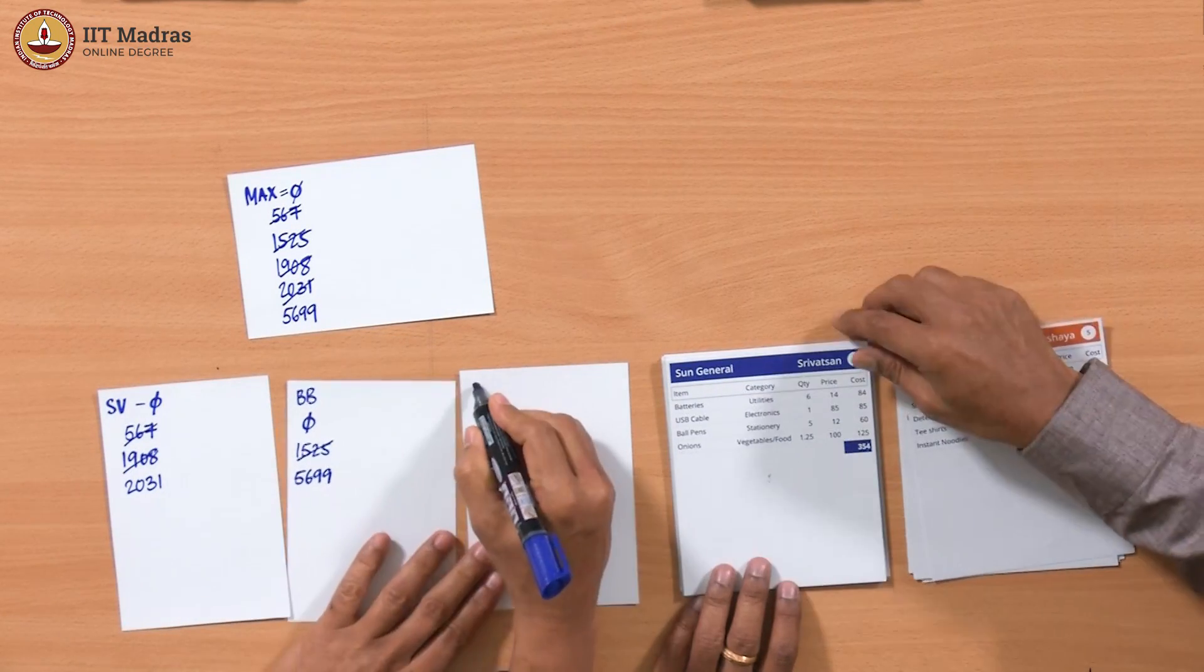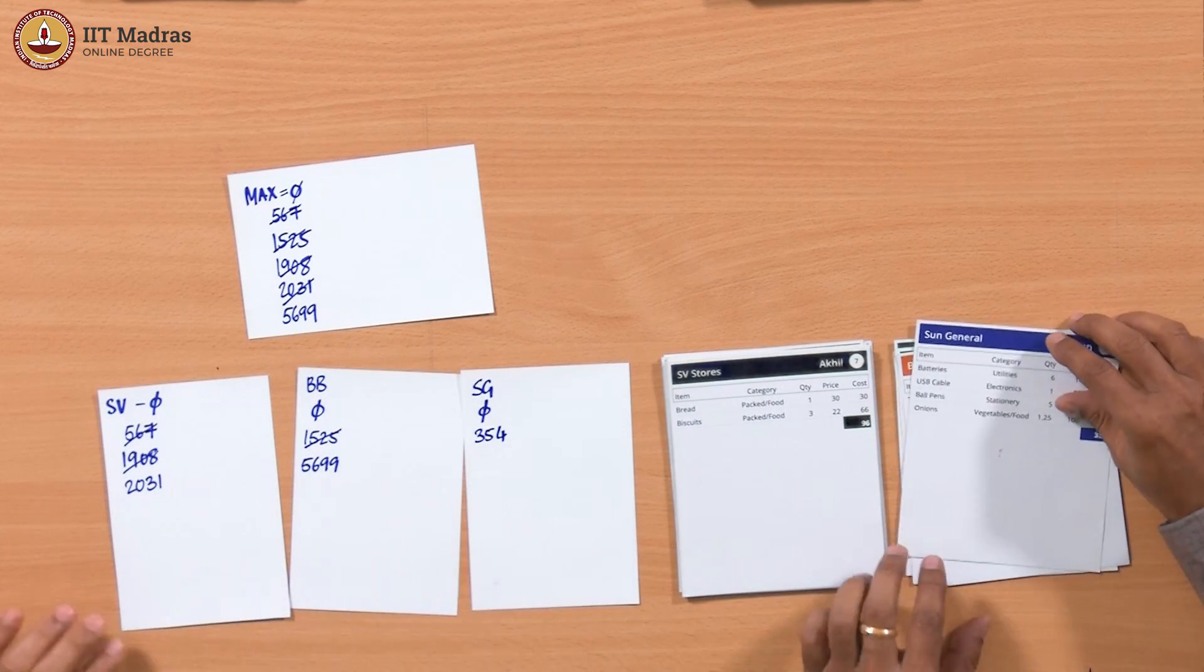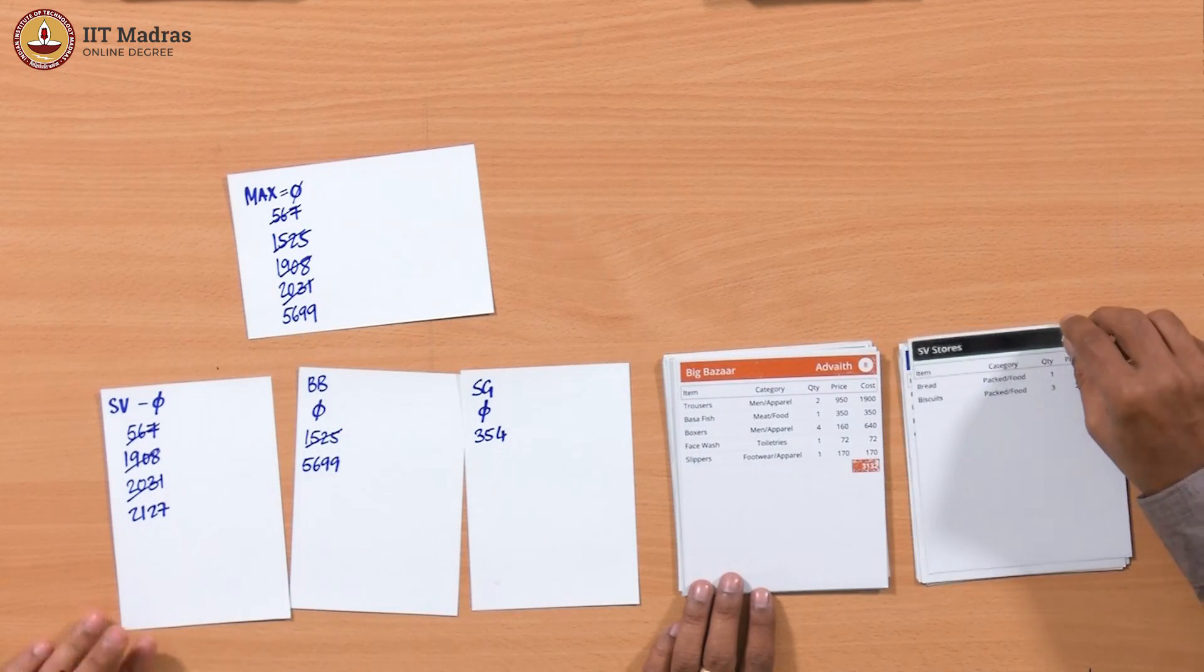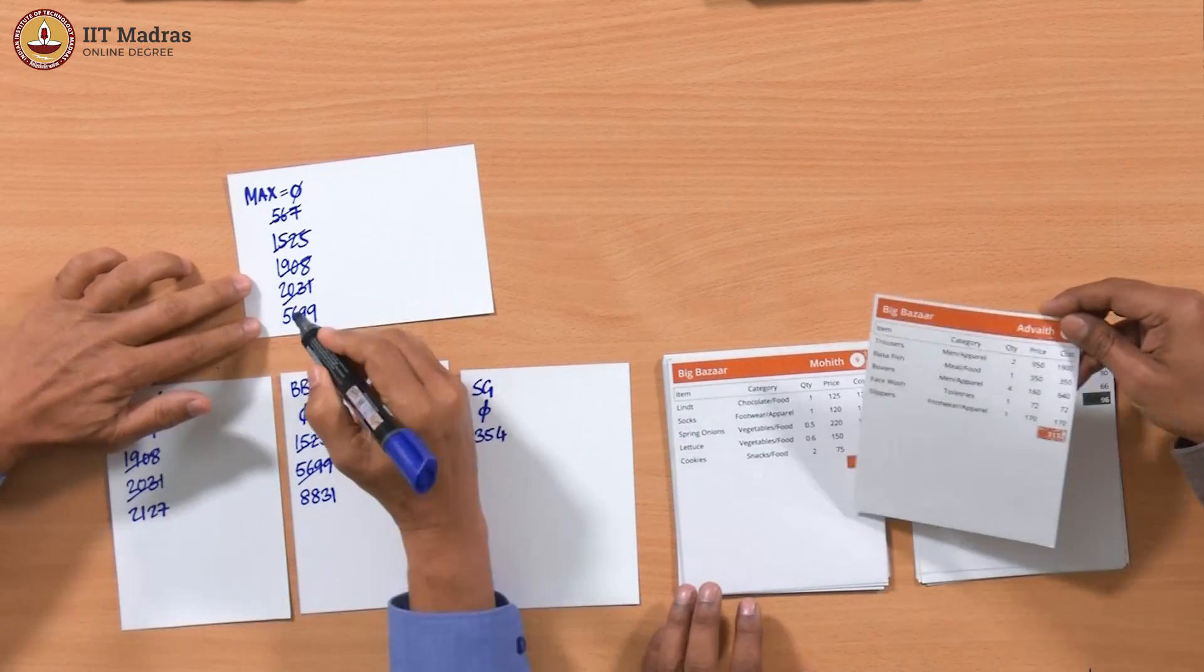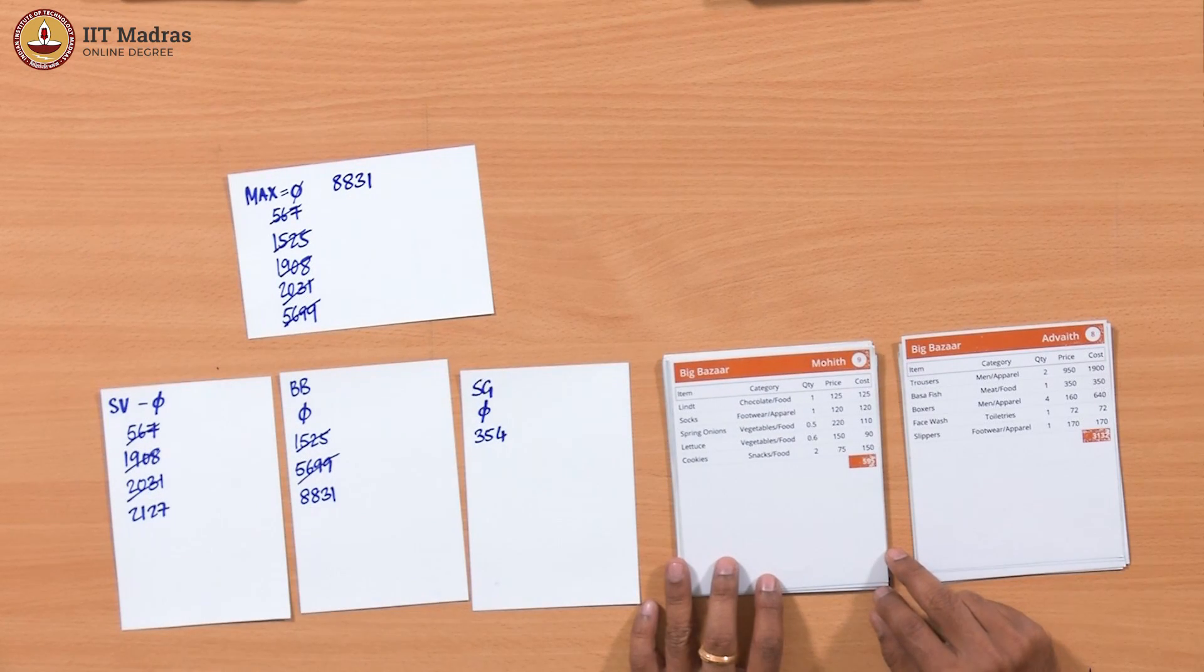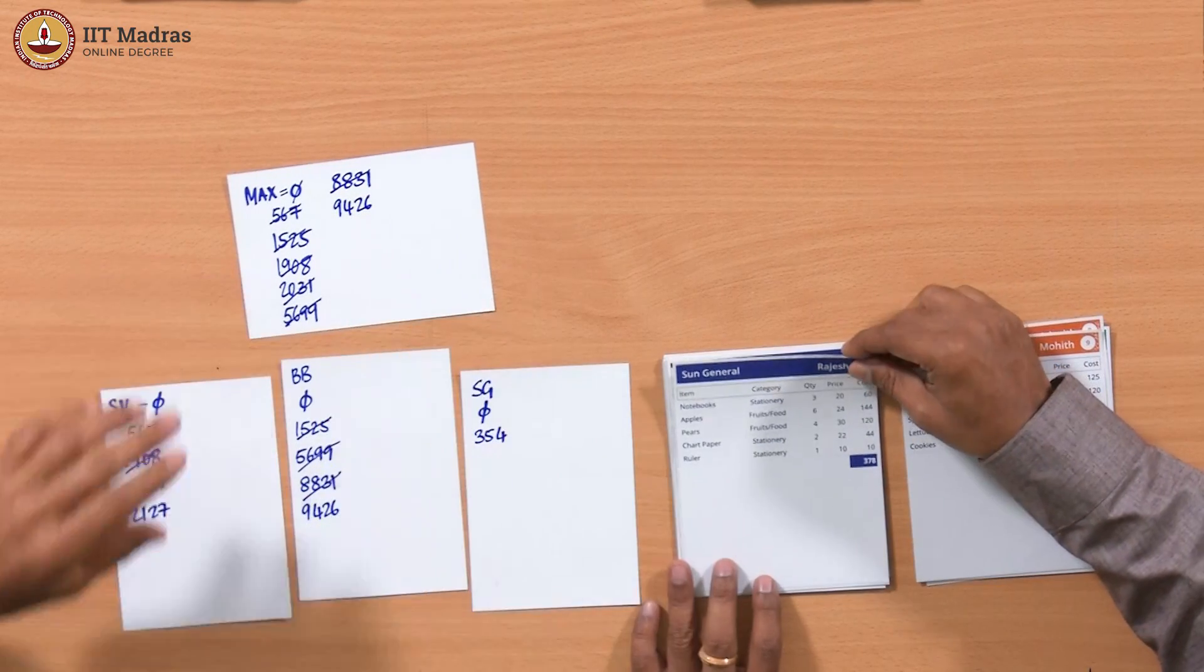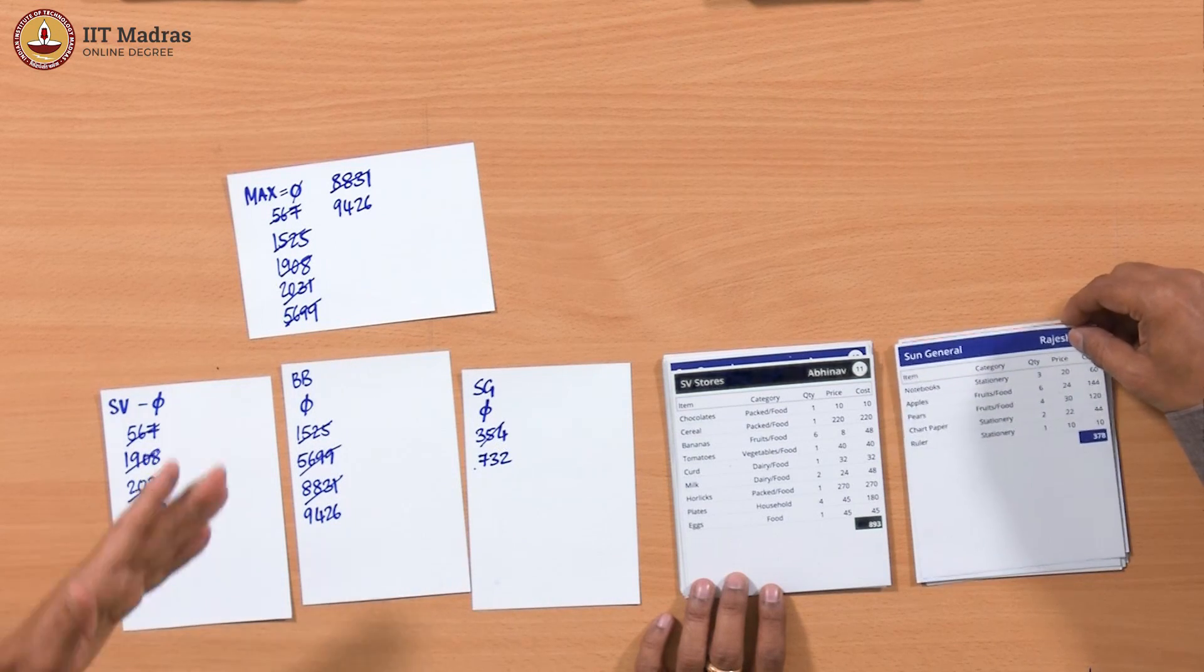Now we have got Sun General, a new shop. We start a new sum, start with 0 and replace it with 354. Now SV stores back again, 96. We add 96, that's 2127. But this is smaller than 5699 so we do not update. Next is Big Bazaar 3132. This becomes now 8831 and this is now a bigger maximum, so max now gets updated to 8831. Now we have 595, this becomes 9426 which is again increasing the maximum. Sun General 378, so this becomes 732 but there is no change in the maximum because that is much smaller.